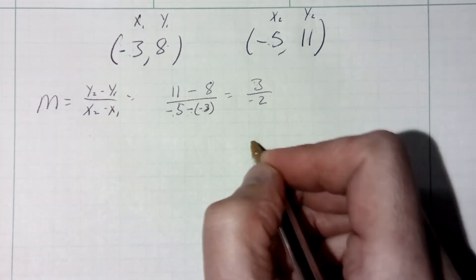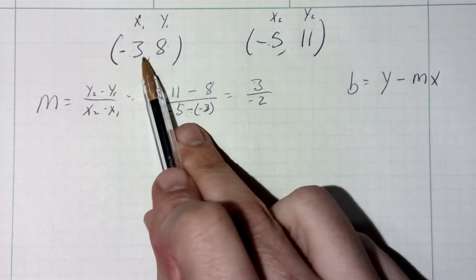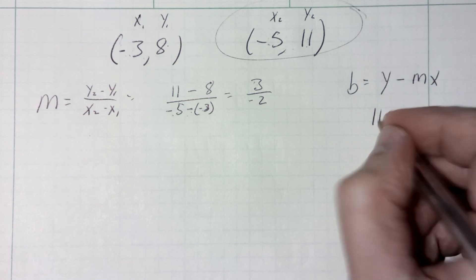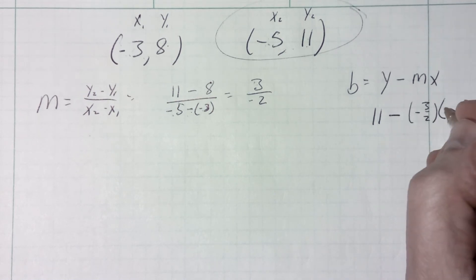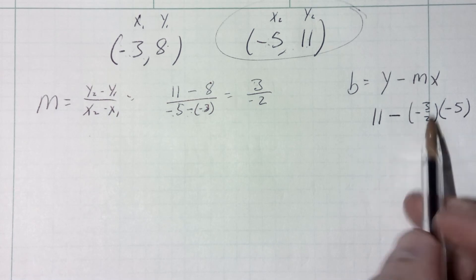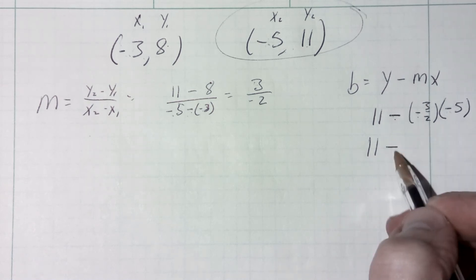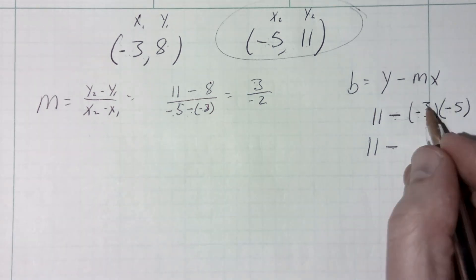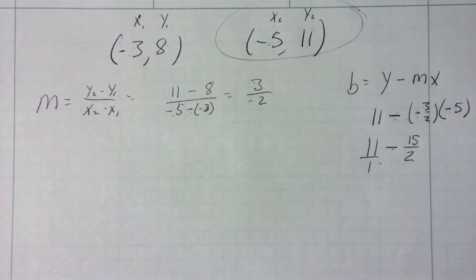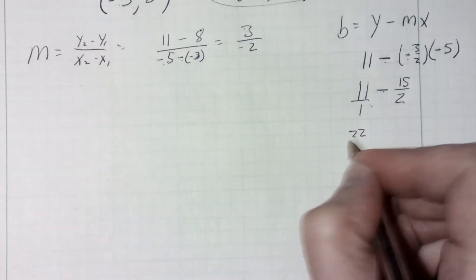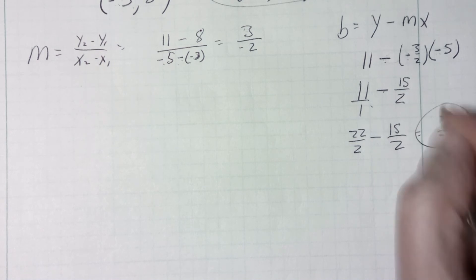Now I need to find my b value. Remember, b is found by doing a y value minus m times x. I'm going to use the second point: y value of eleven, minus slope of negative three halves, times x value of negative five. Be very careful of your signs — I have a negative, a minus, and a minus, so three negatives means it ends up being a minus: eleven minus fifteen halves. To subtract, I need a common denominator: twenty-two halves minus fifteen halves equals seven halves. So my y-intercept is seven halves.